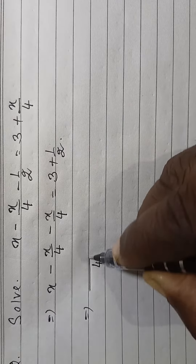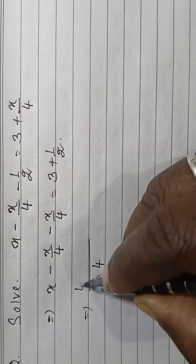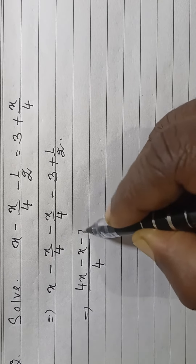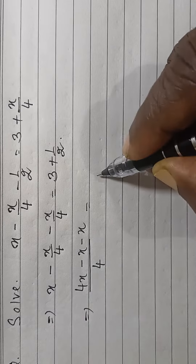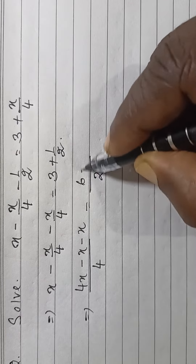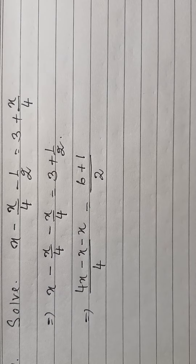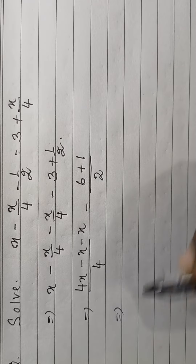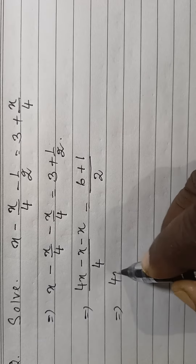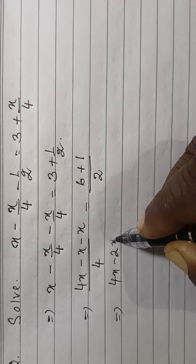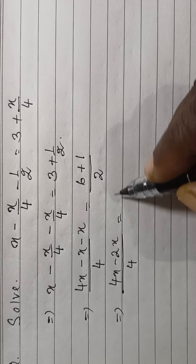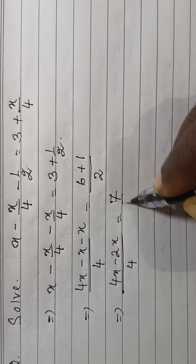4 is the LCM. So, 4x minus x minus x is equal to 6 plus 1, with 2 as the LCM on the right. This gives 4x minus 2x, divided by 4, equal to 7 by 2.